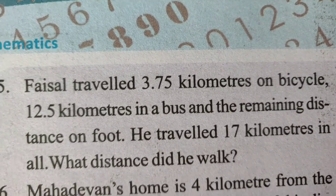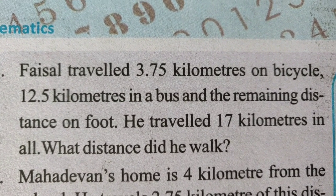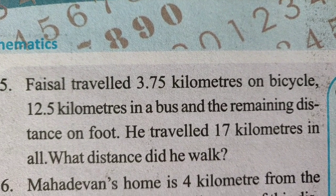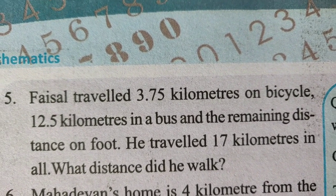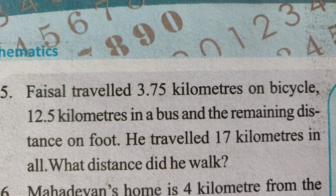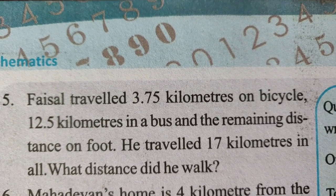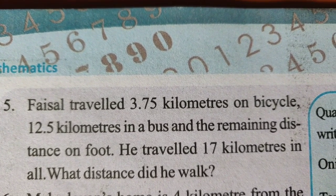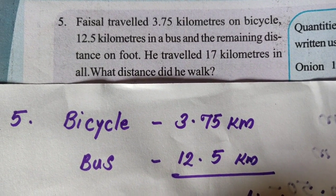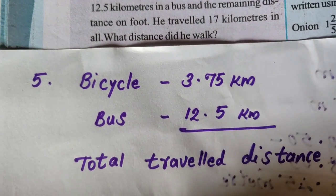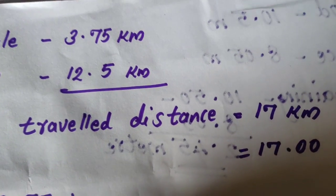Question 5. Faisal travelled 3.75 km on bicycle, 12.5 km in a bus, and the remaining distance on foot. He travelled 17 km in all. What distance did he walk? Bicycle: 3.75 km, bus: 12.5 km, total travel distance is 17 km, so 17.00 is our total.